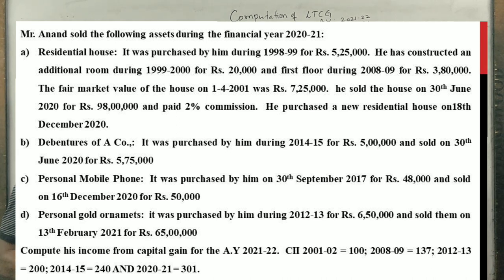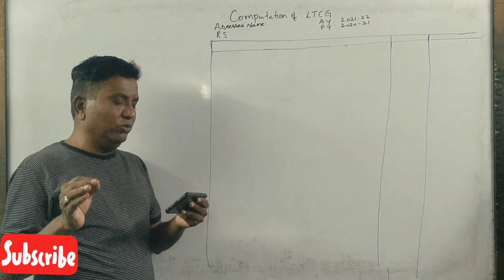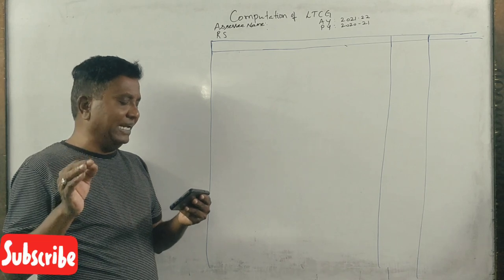First point: Residential House. It was purchased by him during 1998-99 for Rs 5,25,000. He has constructed an additional room during the year 1999-2000 for Rs 20,000 and first floor during 2008-09 for Rs 3,80,000.